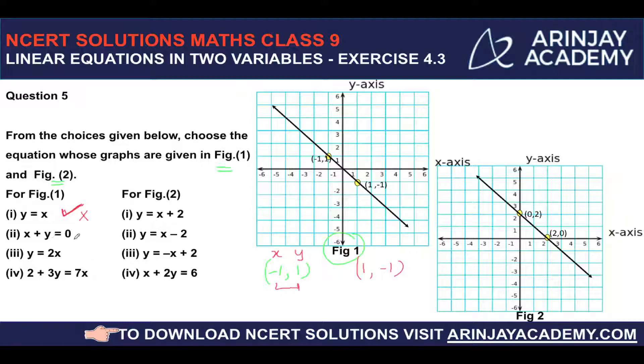x + y = 0. Now in this case, if I add -1 and 1, I get 0. In this also, if I add 1 and -1, I get 0. So therefore, this is the equation which is representing the graph in figure 1.